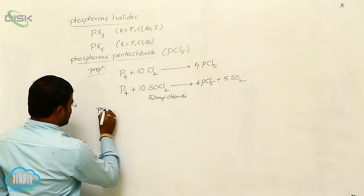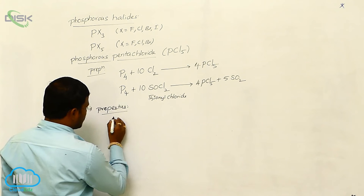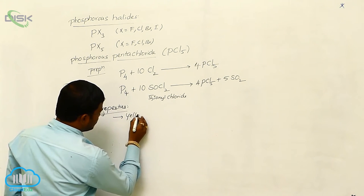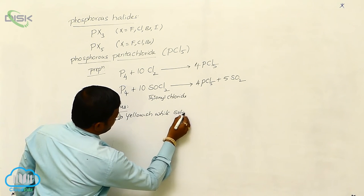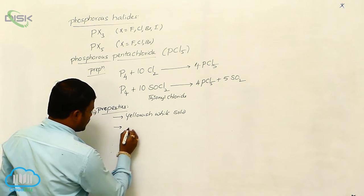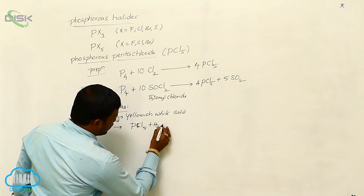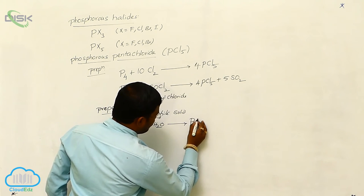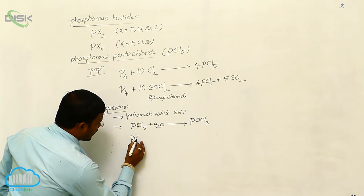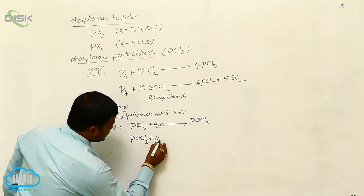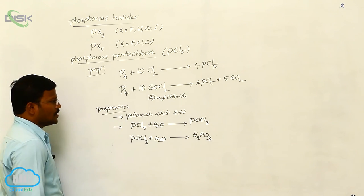Properties of phosphorus pentahalide: it is a yellowish-white colored solid. When it reacts gently with water, it converts into POCl3, phosphorus oxychloride. The formed phosphorus oxychloride, on further hydrolysis, produces H3PO3, phosphorus acid.